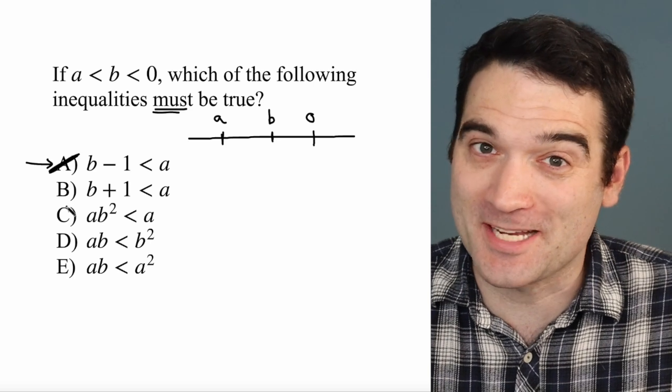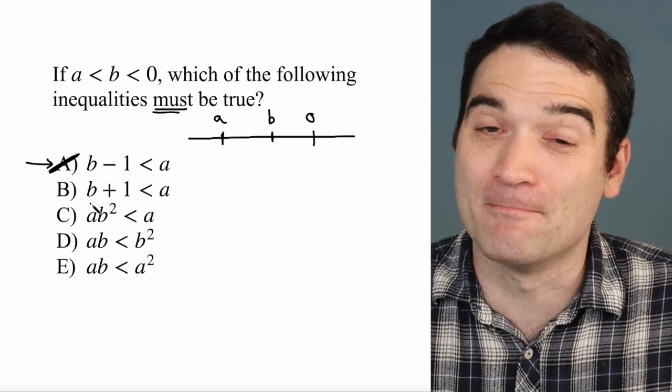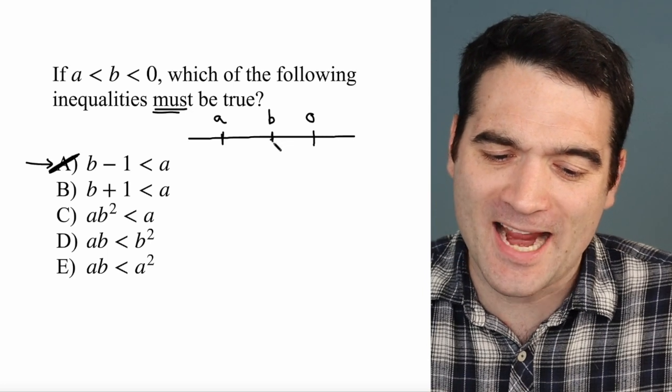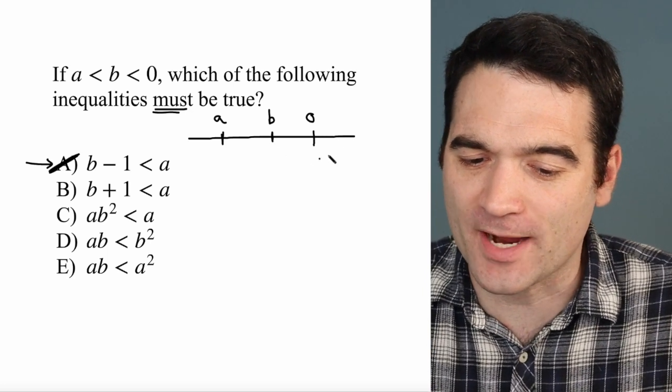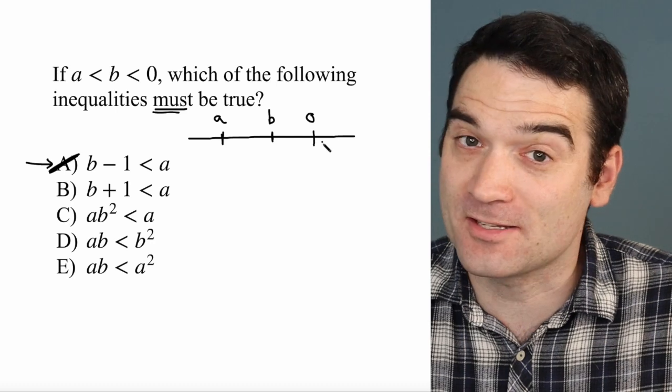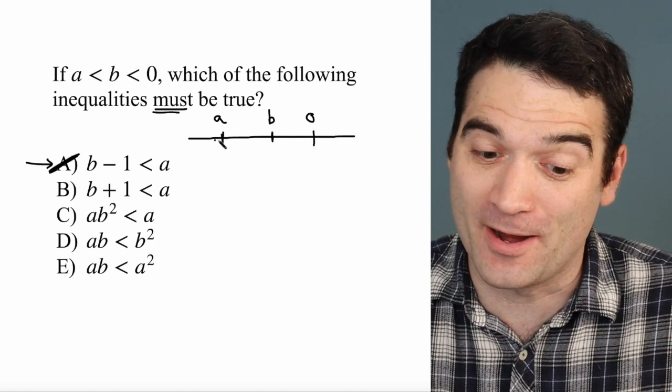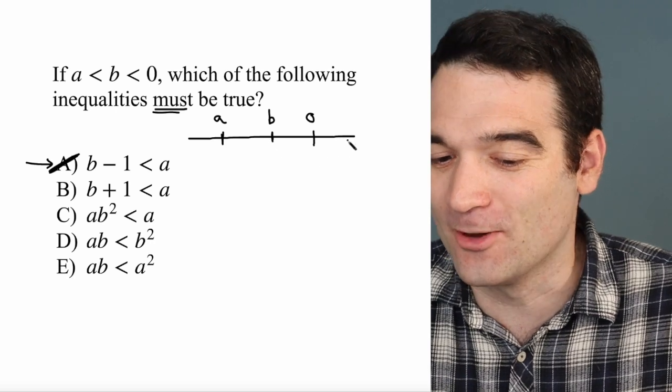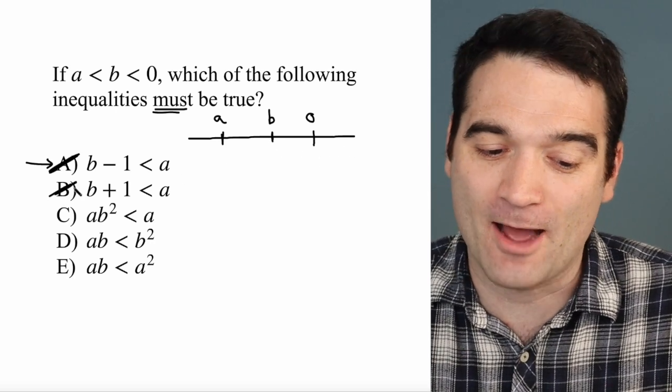All right. How about answer option B? Well, this one's actually pretty easy to eliminate. In fact, it must be false. Here's why. If I start at B and I add 1, I'm going in this direction, right? I'm going to the right. And that's definitely going to be greater than A. Whatever I add to B is going to go positive. So that's out.